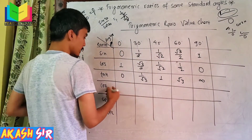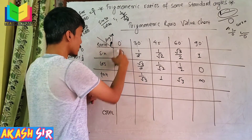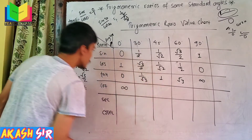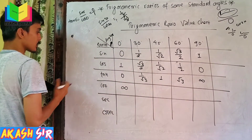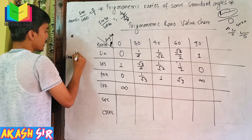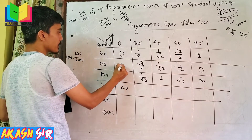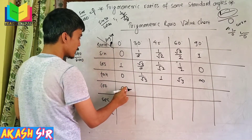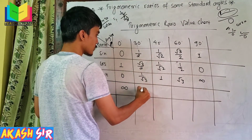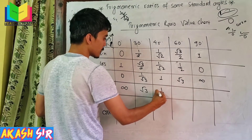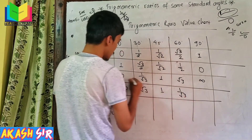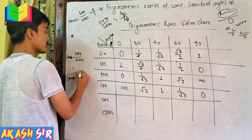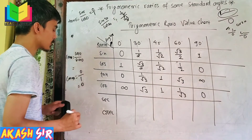Now we will see the reciprocal. The cot value is cos theta by sin theta. Cos 0 by sin 0 is 1 by 0, which is infinity. When the angle is 30, you divide by root 3. Cos 90 by sin 90 is 0 by 1, which is simply 0. Zero by something is always 0.